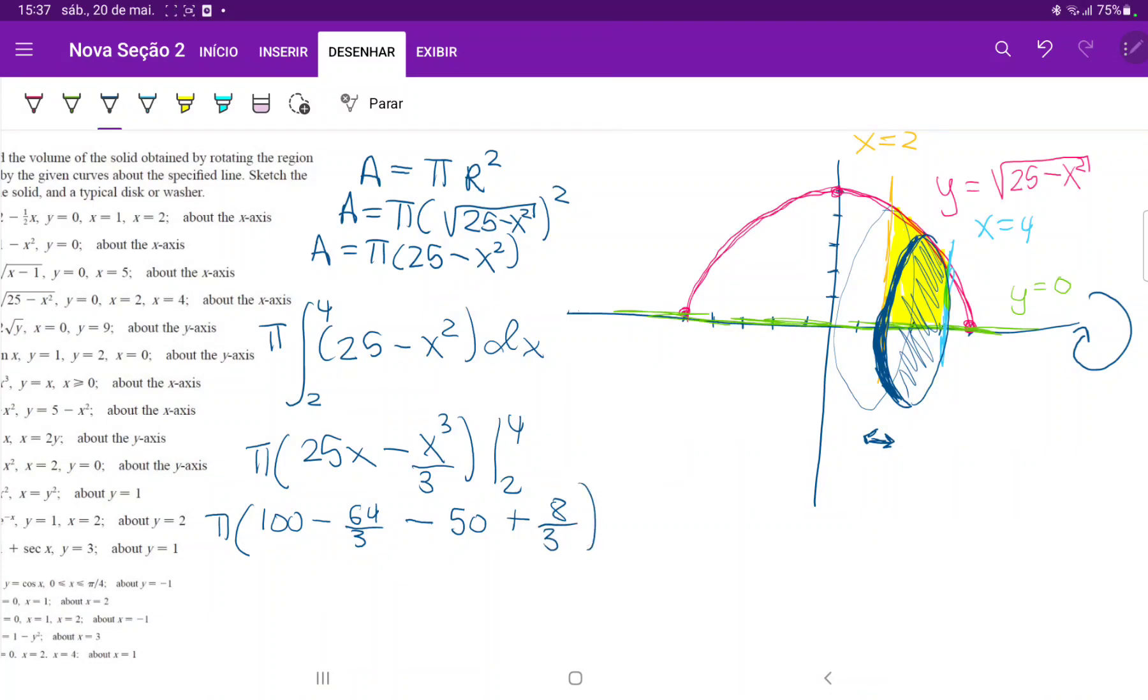So when we put this in our calculator, let's see what this gives us. So minus 64 over 3 plus 100 minus 50 plus 8 thirds. So this should give us 94 pi over 3.